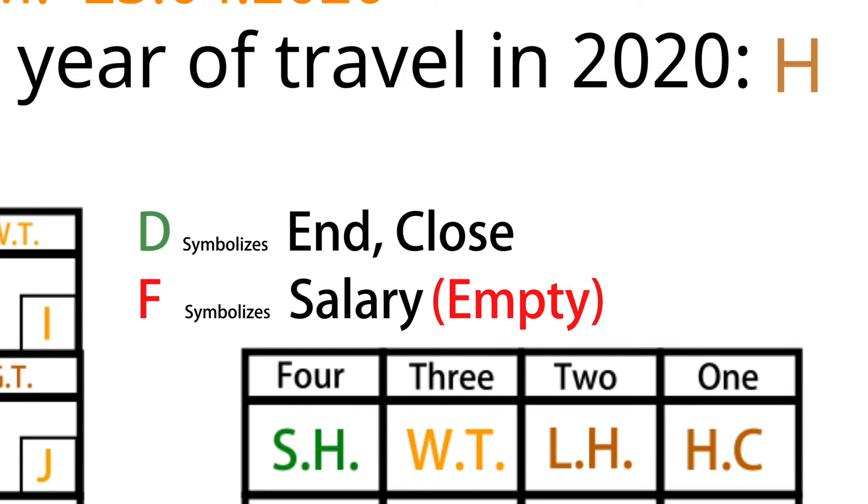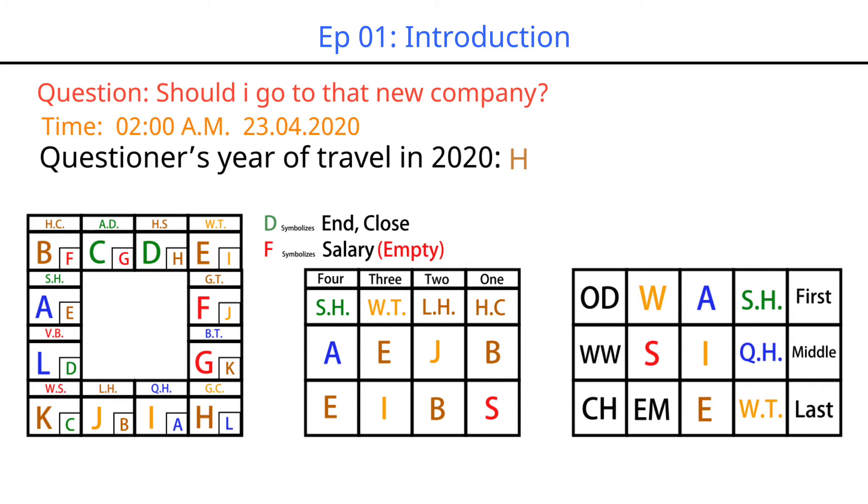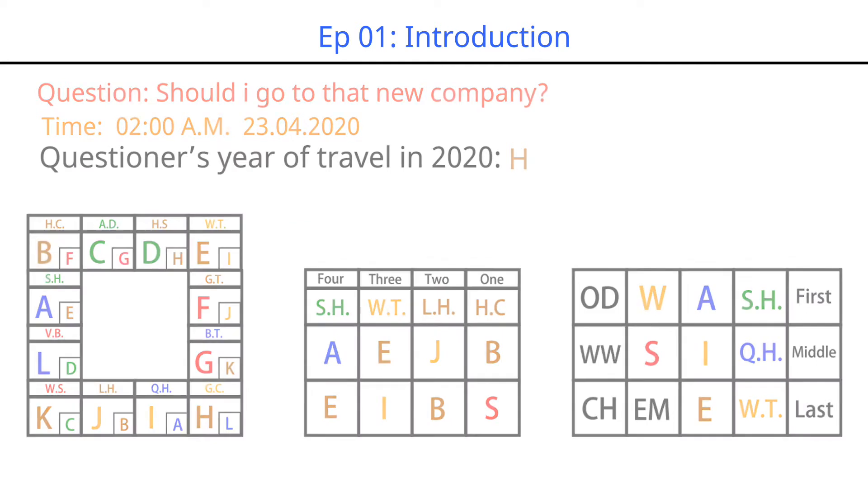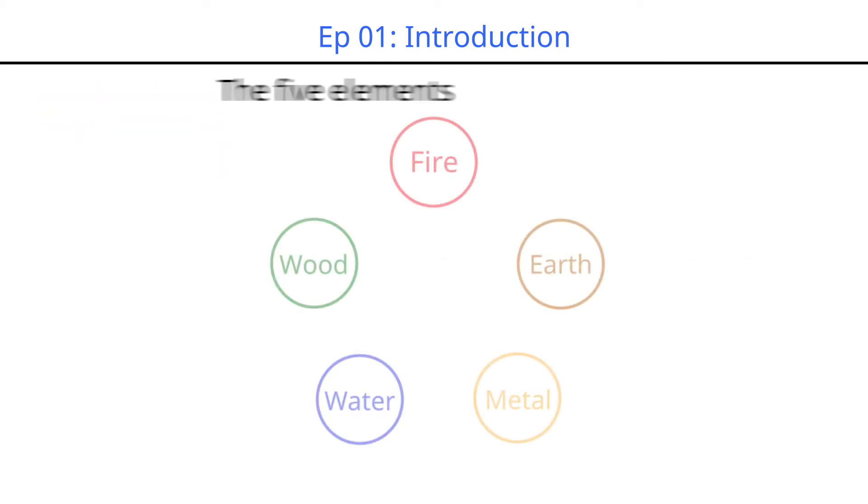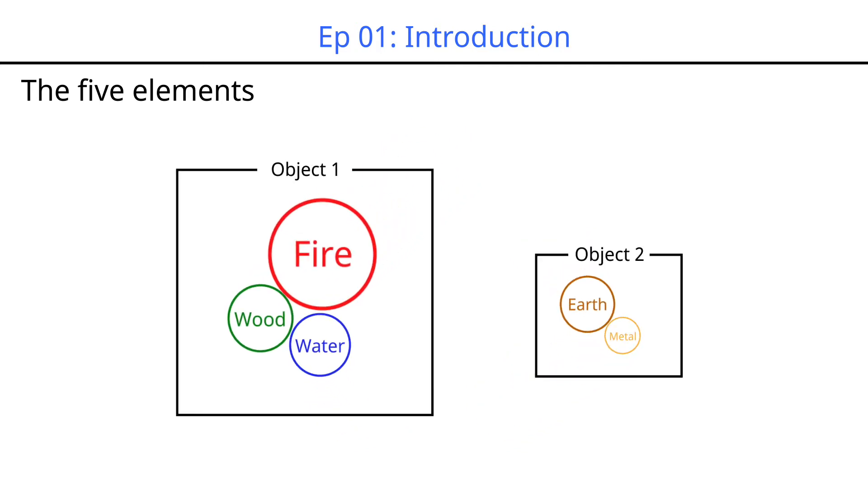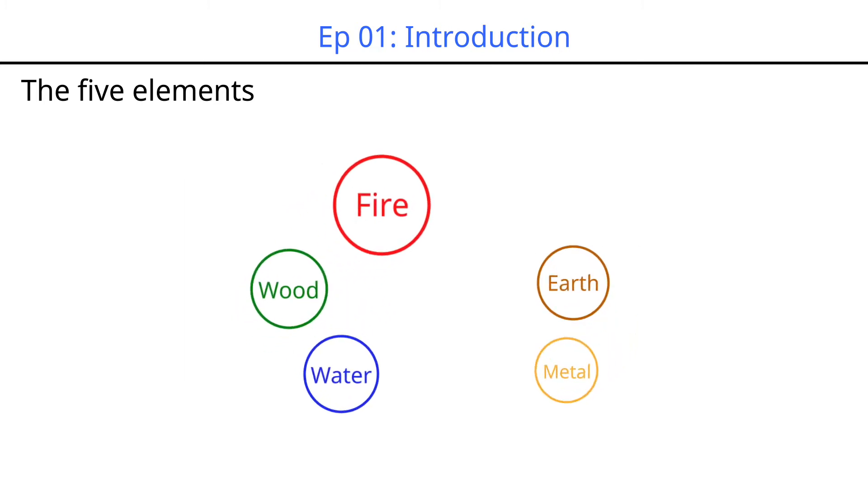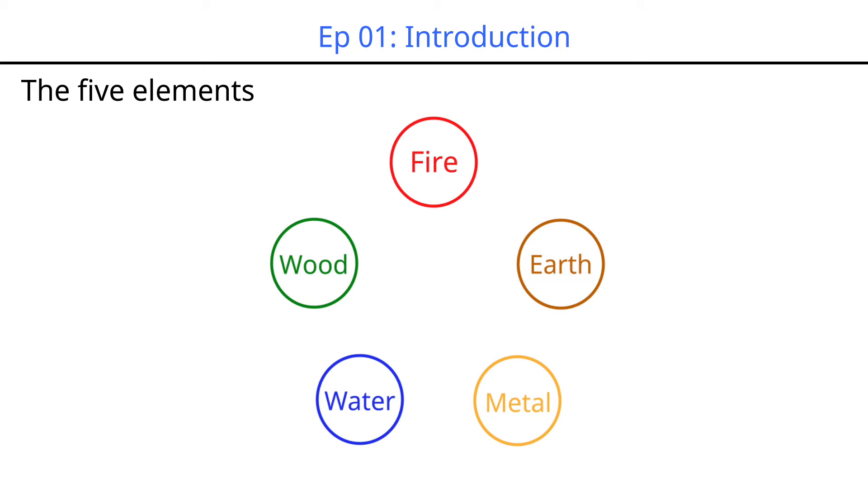What I need to emphasize is that the meanings of these symbols change regularly over time. The concept of five elements is the basis of many prediction methods in China. Ancient Chinese wisdom sages believed that everything in the world is composed of the opposition and unity of these five elements.